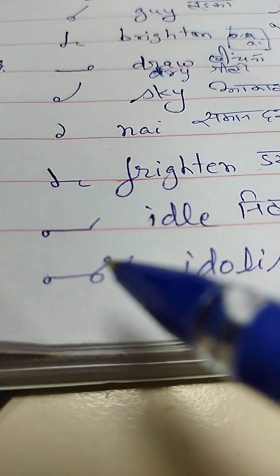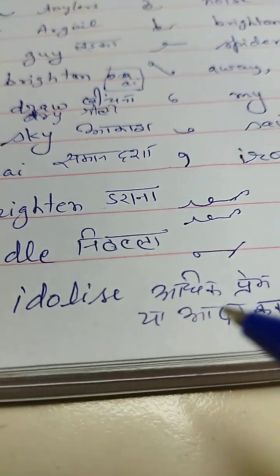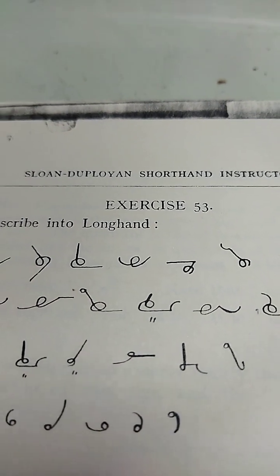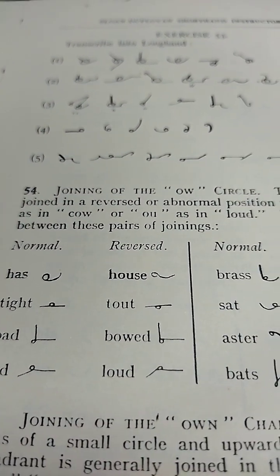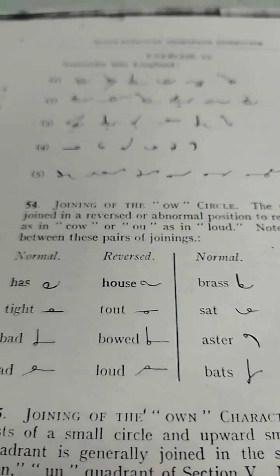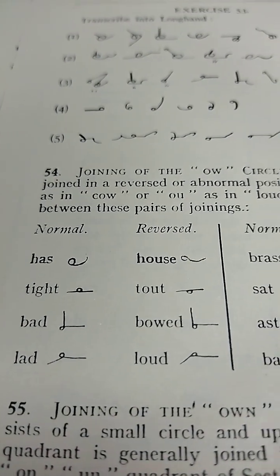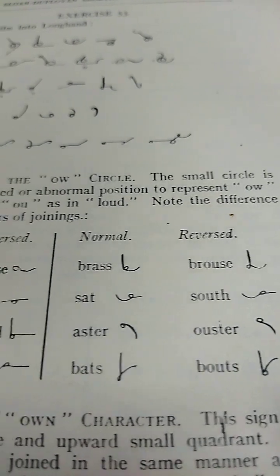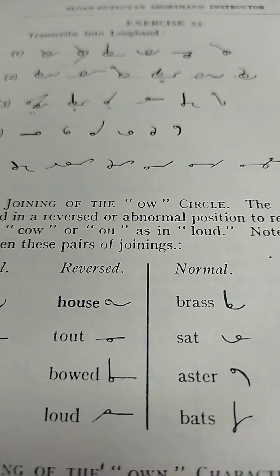This is Idolize — Adhik Priyam ya Adhar Karna. So this was Exercise 53. We shall read further in the next video. This is very important — outlines coming. Very very important. We will see in next video. Bye.